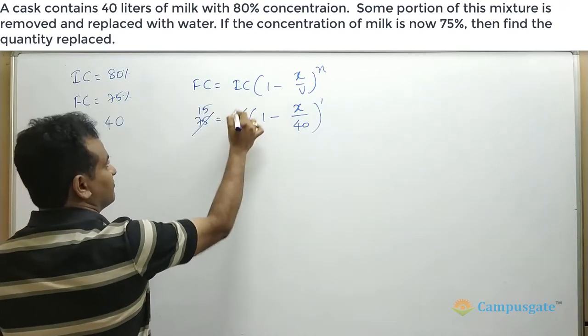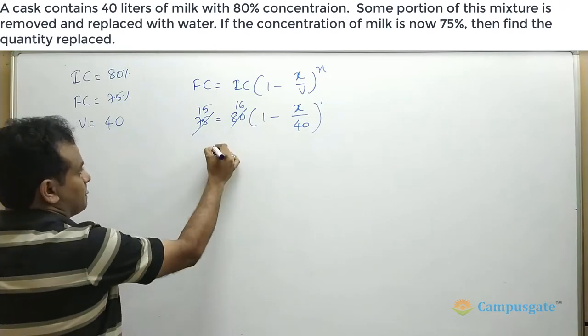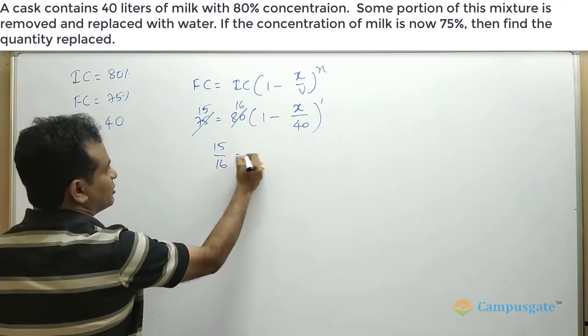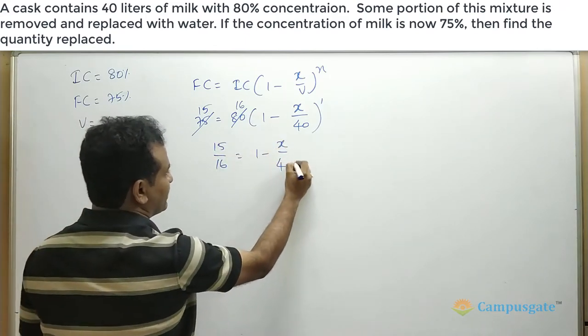So 5 goes 15 times here. 5 goes 16 times. Therefore 15 by 16 equal to 1 minus x by 40.